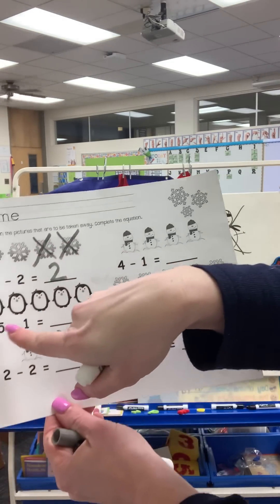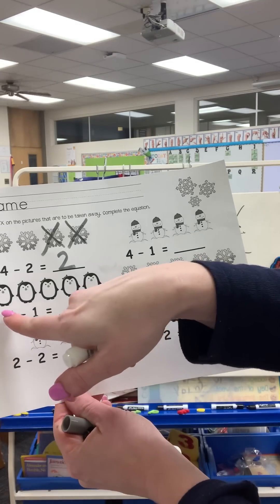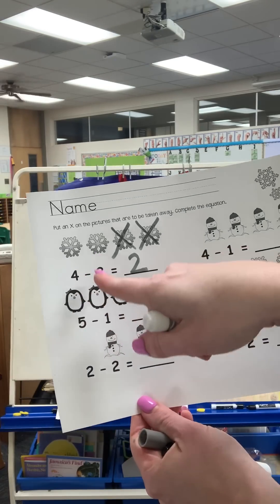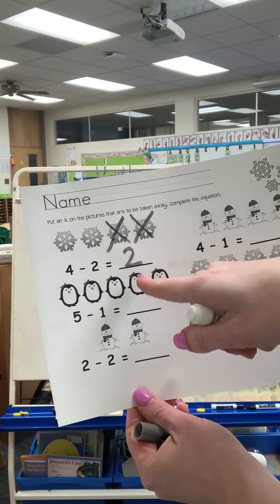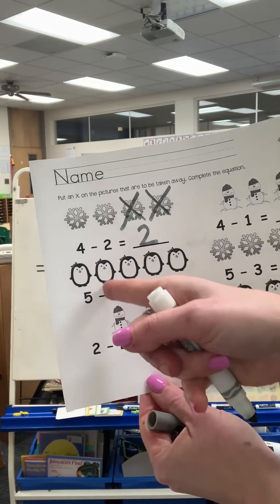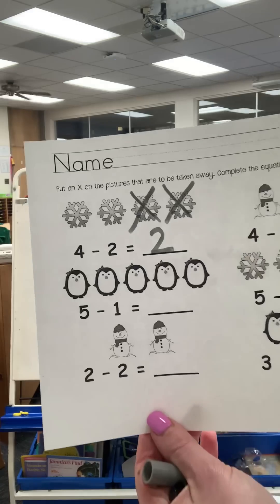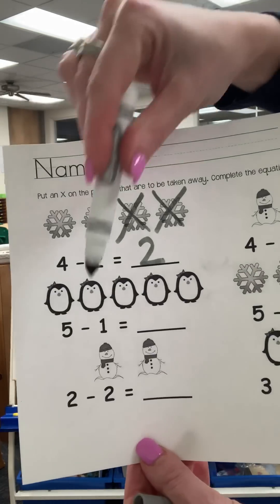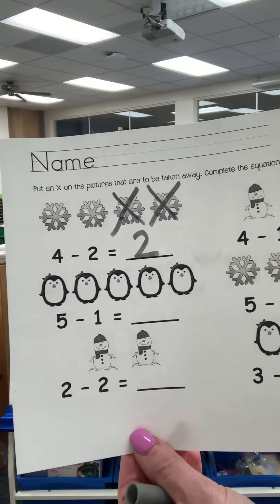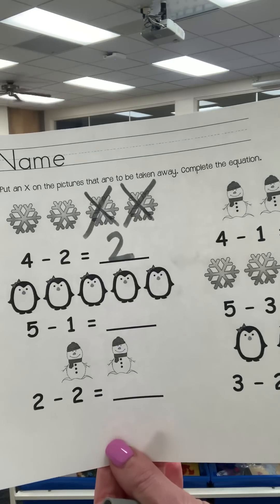I'm going to go straight down and I can see that there are five penguins. Let's count them. One, two, three, four, five. The problem has the symbol. What does that symbol mean? Exactly. It means something's going to go away.